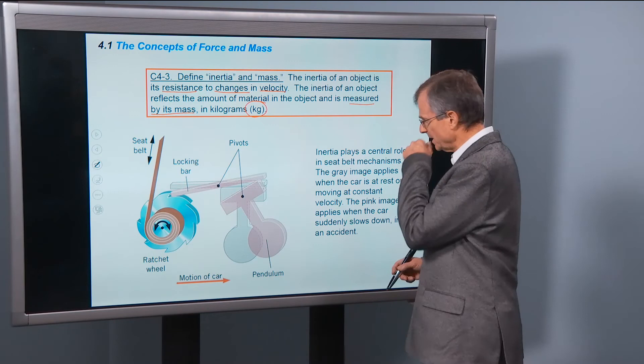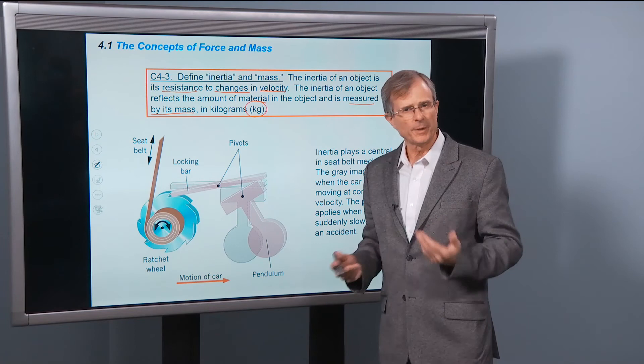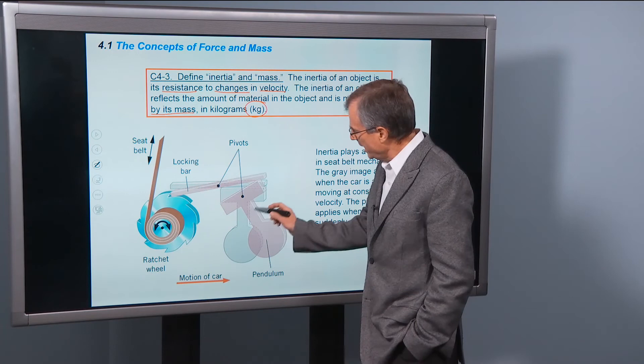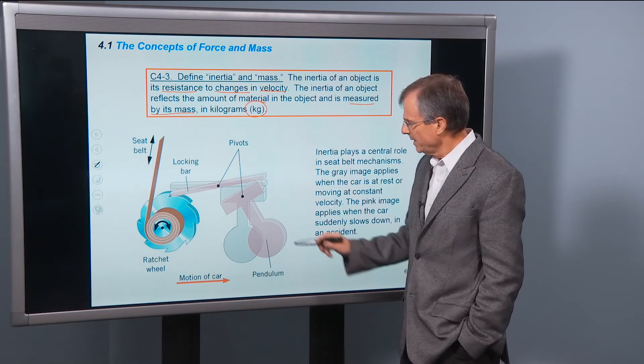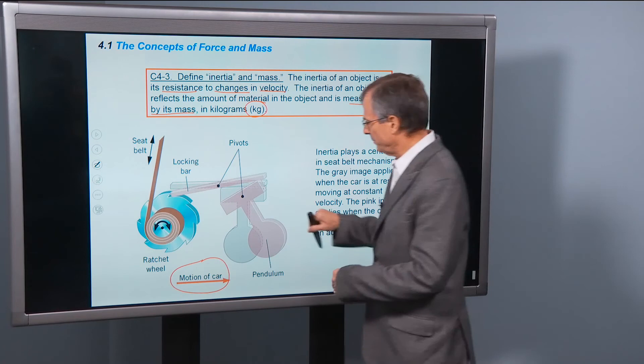One example is the seat belt mechanisms. So in a seat belt mechanism, you want the seat belt to protect you in the case of an accident. But you don't want it to restrict you when there's not an accident, so that you can move forward with the chest belt that comes around you and check something out of the glove box. So there's this mechanism with this gray-shaped T piece of metal pivoted here that just hangs straight down normally while you're driving along in a car.